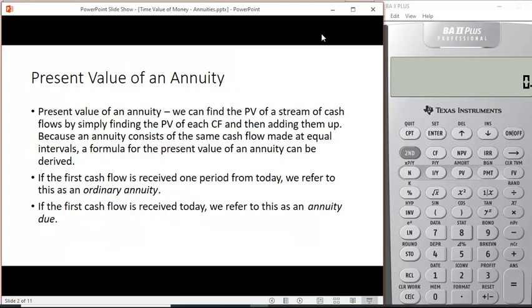These are questions that everybody's going to be interested in even if you're not a finance professional. The first concept is the present value of an annuity. We're trying to find out what a bunch of payments are worth today. In the case of an annuity, all those payments are the same, so it allows us to derive a specific formula for calculating it. If the first cash flow is received one period from today, we refer to this as an ordinary annuity. If the first cash flow is received today, we refer to this as an annuity due.